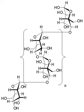Glycogen is a multi-branched polysaccharide of glucose that serves as a form of energy storage in animals, fungi, and bacteria.